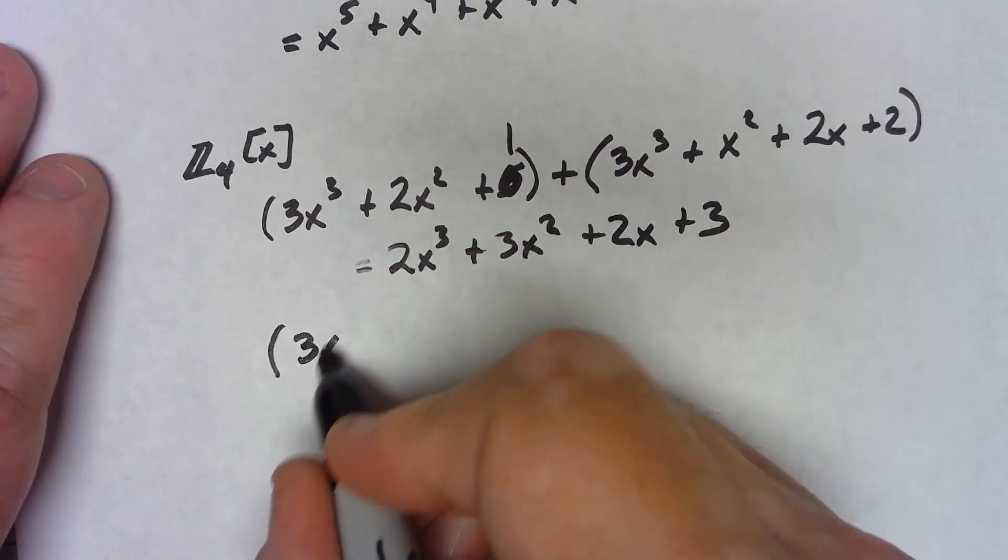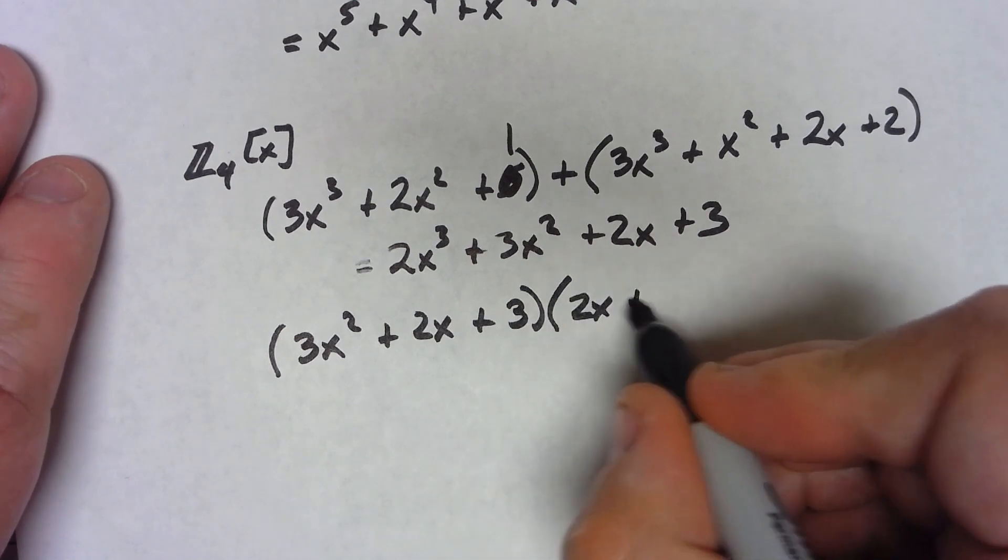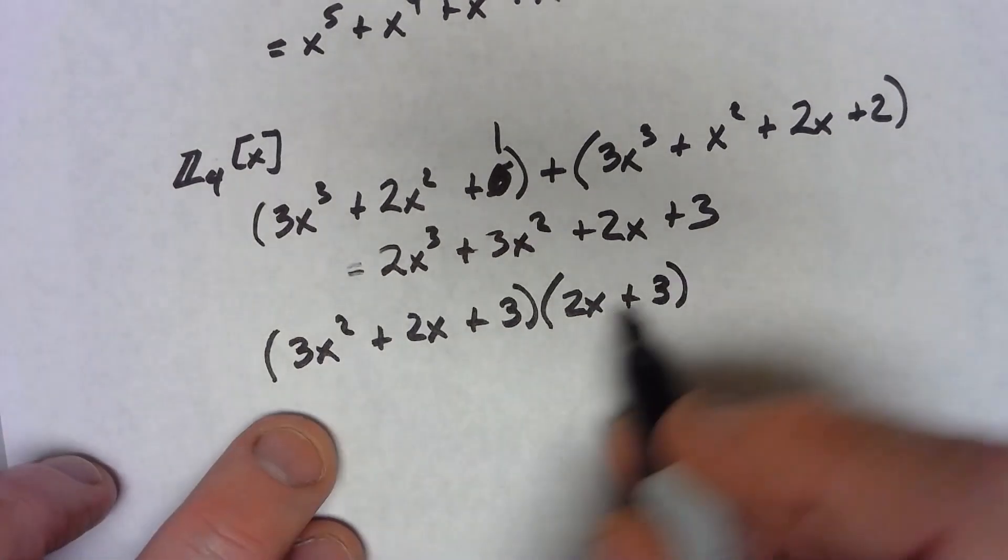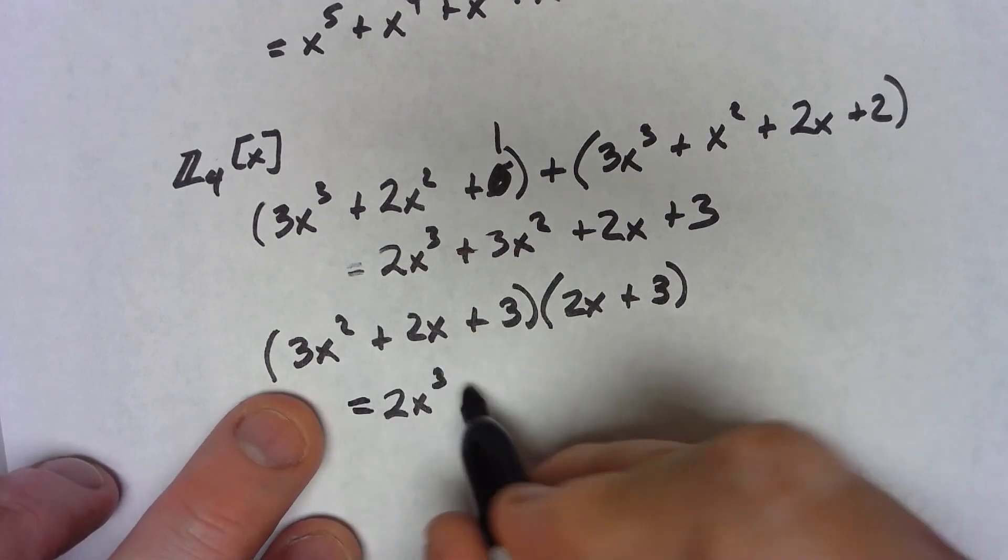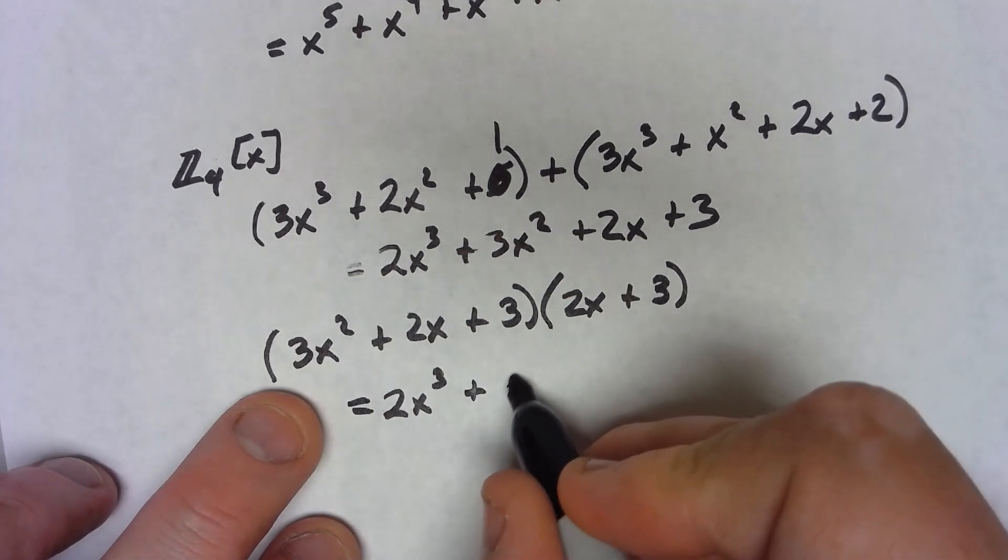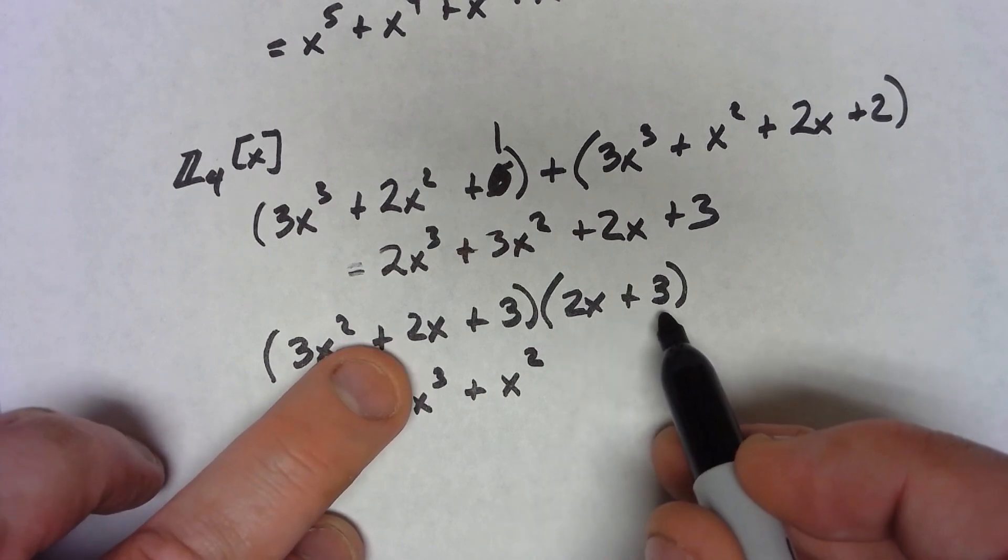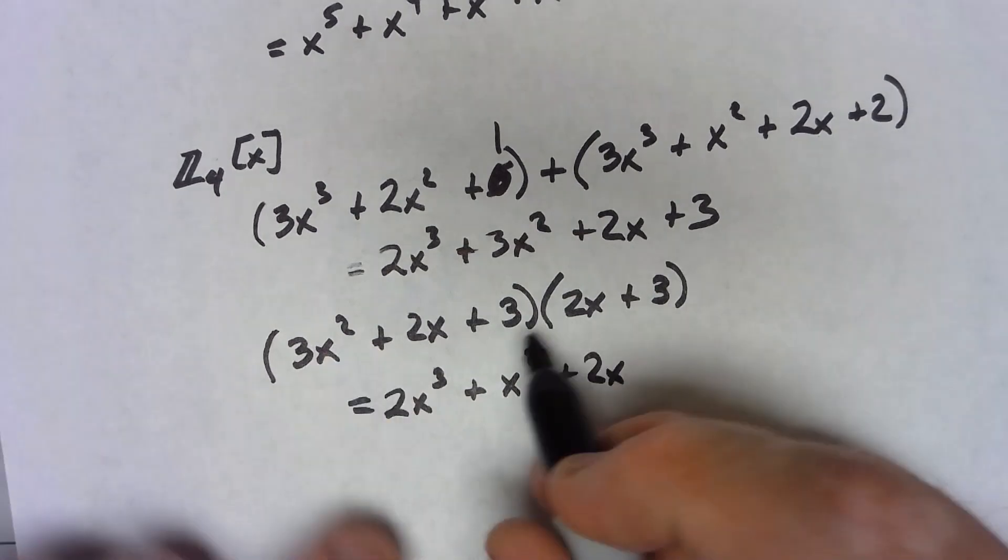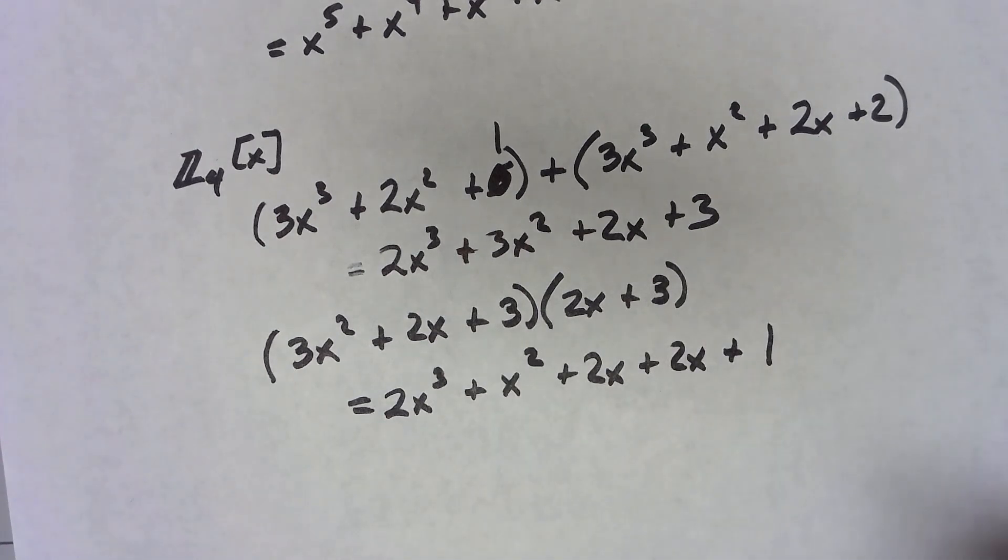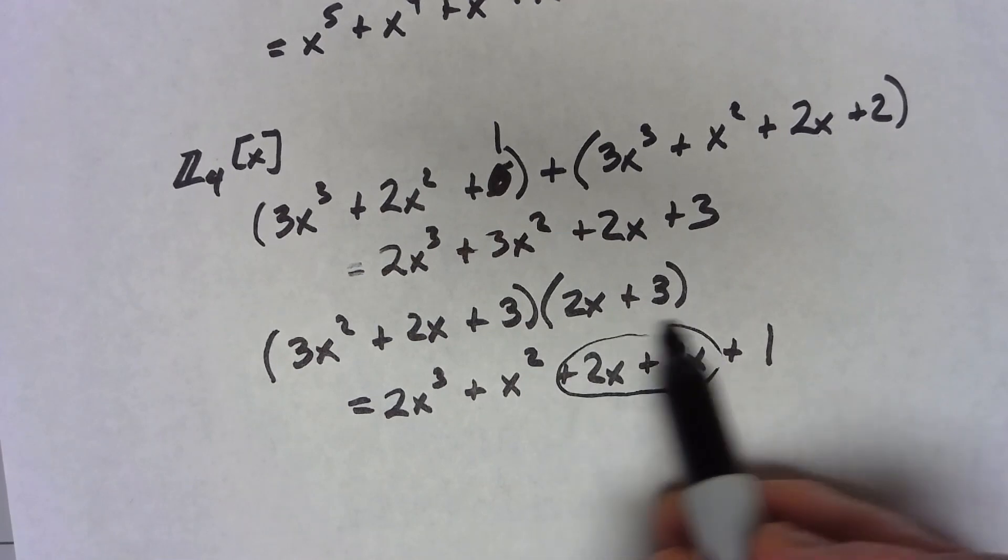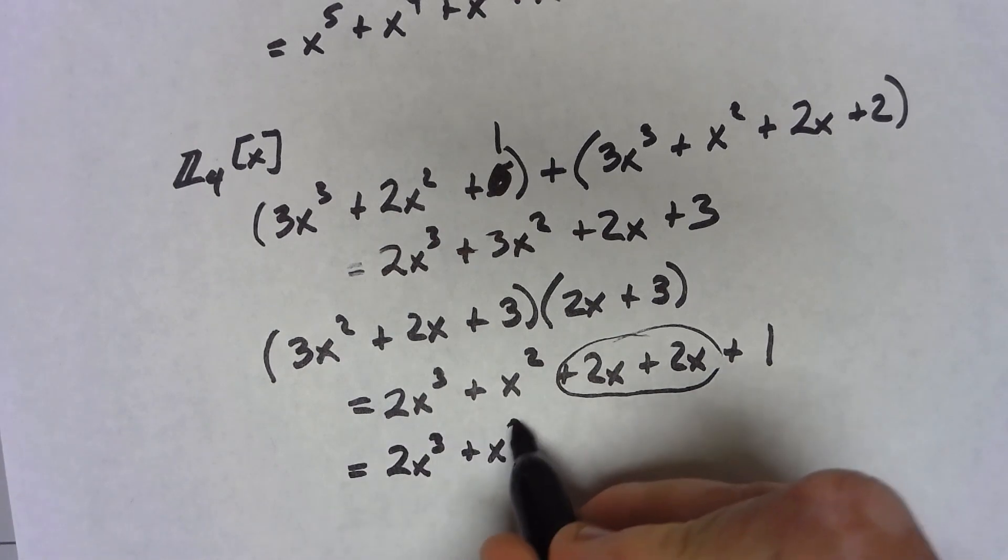If I do 3x squared plus 2x plus 3 times 2x plus 3, 6x cubed would really be 2x cubed. We'd have 9x squared, which would really be just x squared. We'd have 4x squared, which is just 0. We'd have 6x, which is 2x. Another 6x is another 2x. 3 times 3 is 9, which is really 1. And again, 2x plus 2x, 4x is actually 0. So this would be 2x cubed plus x squared plus 1.